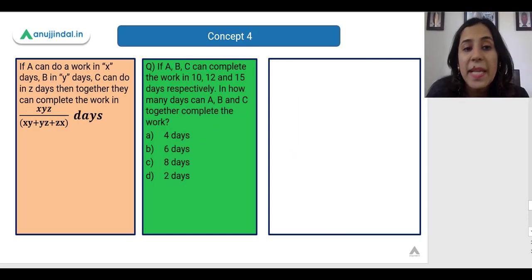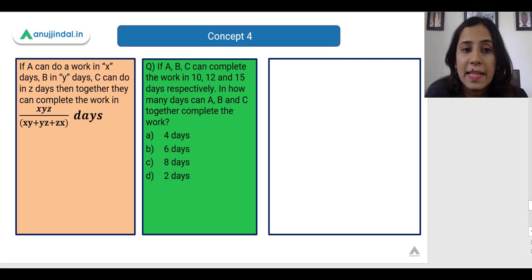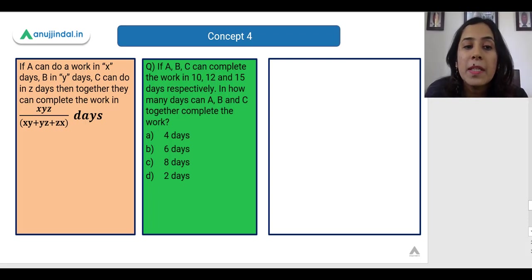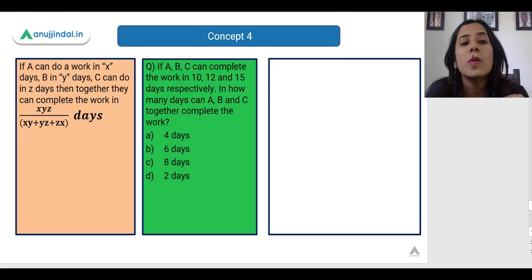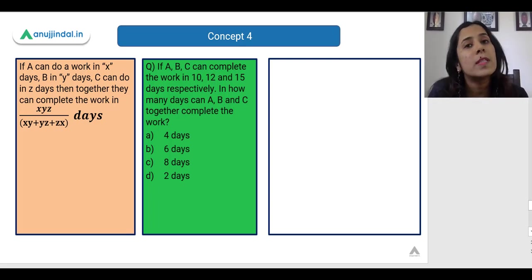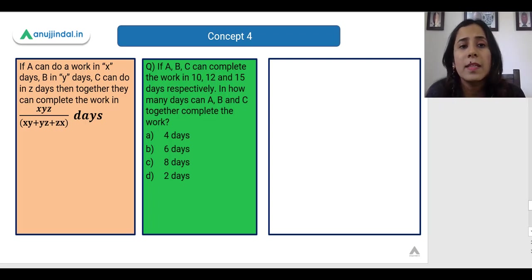Next shortcut: if A can do a work in X days, B in Y days, and C in Z days, then together they can complete the work in (X × Y × Z) / (XY + YZ + XZ) days. Instead of two people, here we have three people A, B and C. The concept is the same — the combined time is the product of individual times divided by the sum of pairwise products.